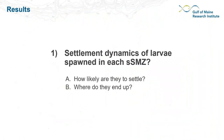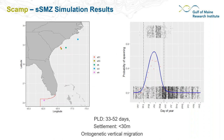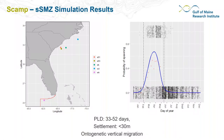Now moving to results. For each of the three questions I'll walk through scamp first, then red snapper, then present a summary. The first question is: what are the settlement dynamics of larvae spawned in each spawning SMZ — how likely are they to settle and where do they end up? We released large numbers of virtual larvae from each of the five SMZs spread throughout the scamp spawning season. For scamp, pelagic larval duration is 33 to 52 days with settlement at less than 30 meters, and vertical distribution changes throughout ontogeny.